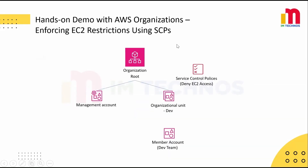Now let's do a hands-on demo. First, we will enable or create an AWS organization in one account. Then we will create an organizational unit and define an SCP — a service control policy that denies access to EC2. We will attach that policy to the OU so that any AWS account placed under it will not be able to access EC2 instances. Next, we will either invite an existing account or create a new one to join our organization. Once the member account is part of the organization, we will move it under the OU where the SCP is attached.